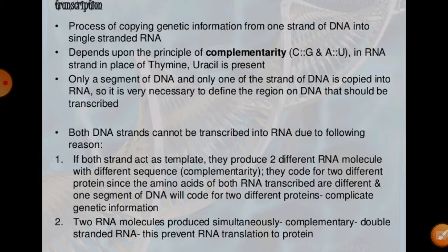Hence they cannot be complicating the genetic information transformation — these both proteins would be capable of disrupting the transfer of different information during that machinery. The second reason is that the two RNA products would be complementary to each other, and they would form a double-stranded RNA without translation, making the process of transcription futile. There is no double-stranded RNA found, and it cannot help for the process of translation.